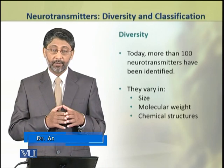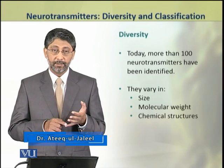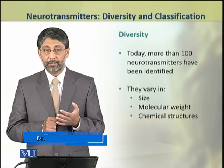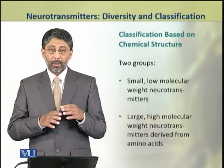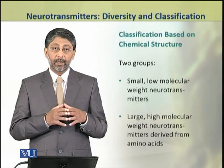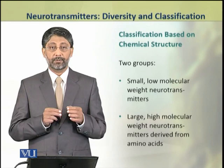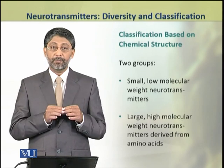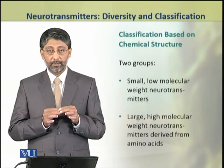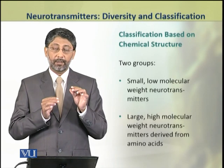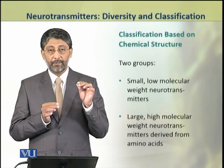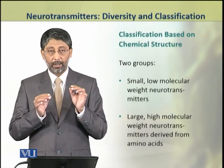These neurotransmitters vary in their size, molecular weights, and chemical structures. Based on their chemical structure, these neurotransmitters are classified into two groups. The first group includes small low molecular weight neurotransmitters, while the second group contains larger, high molecular weight neurotransmitters, which are derived from amino acids.